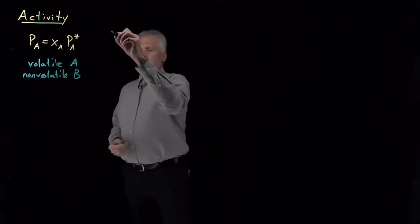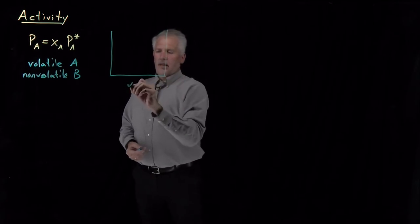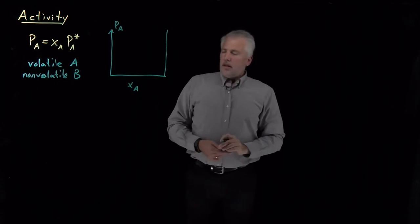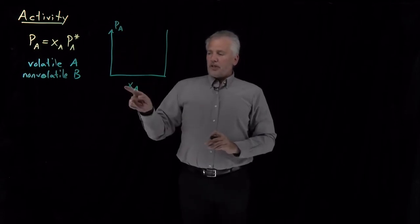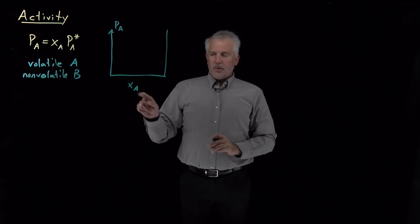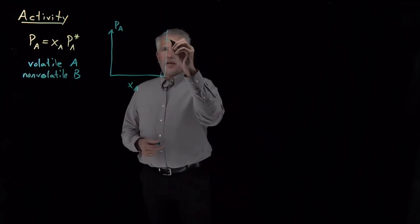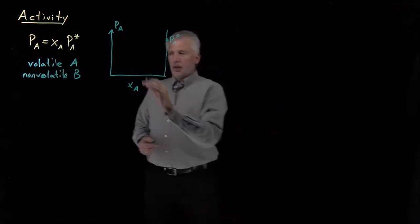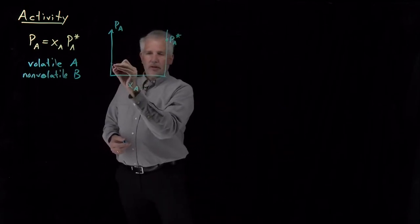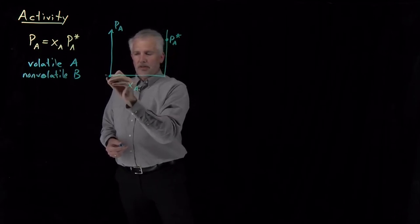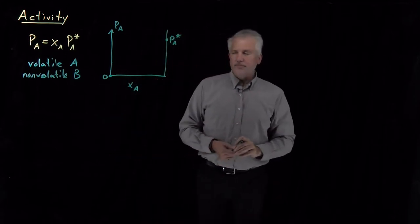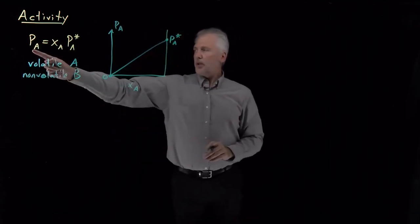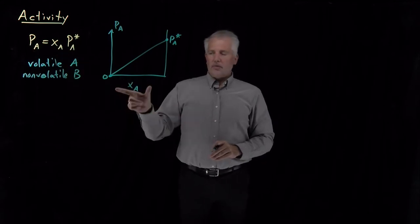If I draw the partial pressure of the volatile solvent as a function of its mole fraction: on the right side of the graph, when it's pure solvent, it has a partial pressure equal to its vapor pressure. On the left side, the vapor pressure of B is zero — it's non-volatile. So Raoult's Law predicts that the partial pressure goes up linearly with the mole fraction of the solvent.